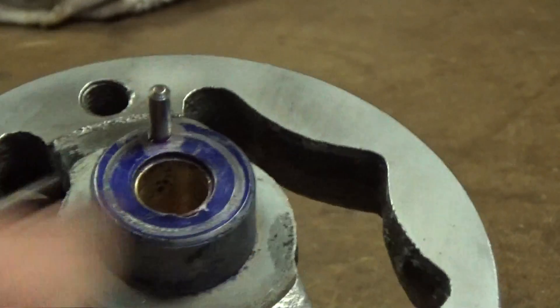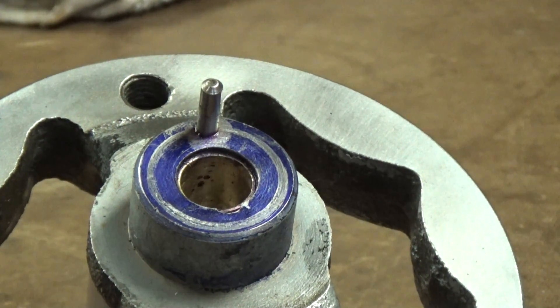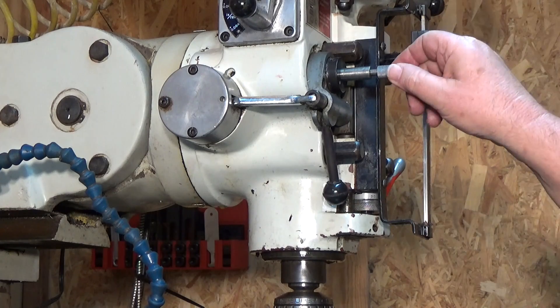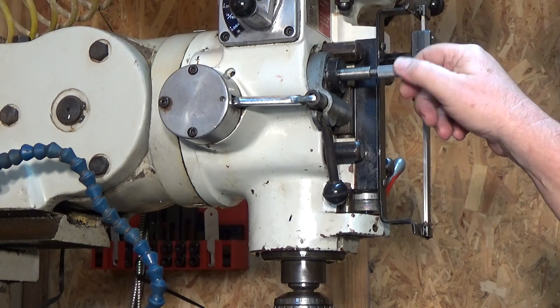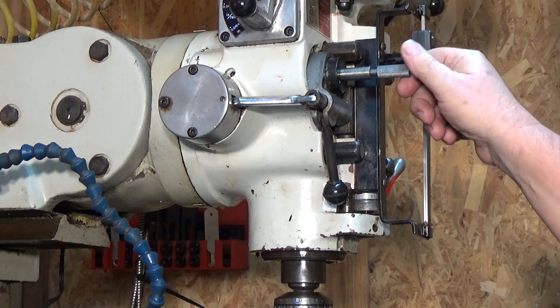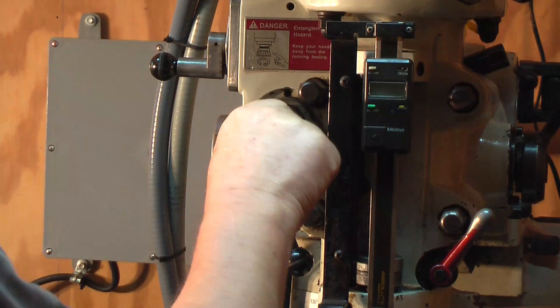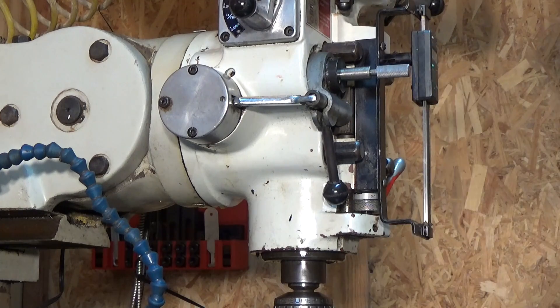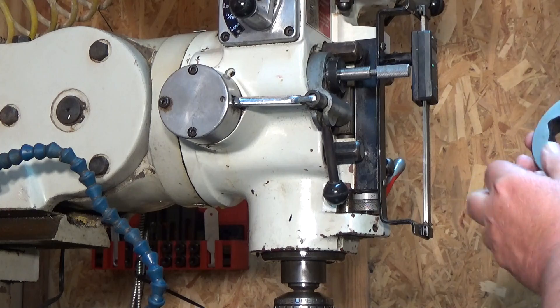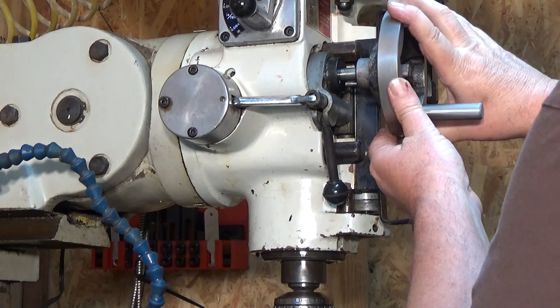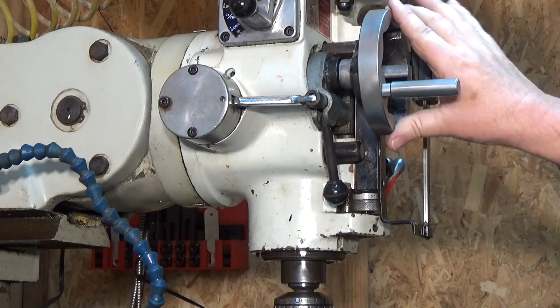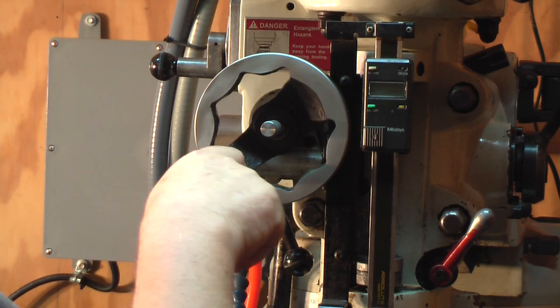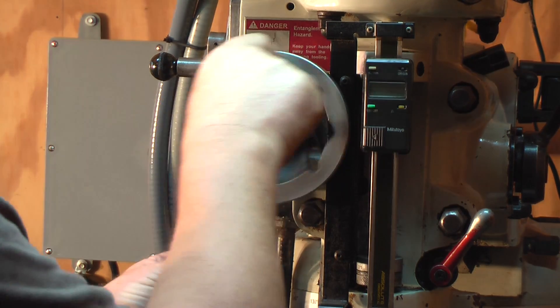All right, so here's how this hand feed works, or this micro feed, fine feed, whatever you want to call it. I've got our up and down knurled button put in place. Slide the hand wheel over it till it engages the pin. Of course you can see it'll freewheel there and you don't get anything. What you have to do is pull this clutch out.